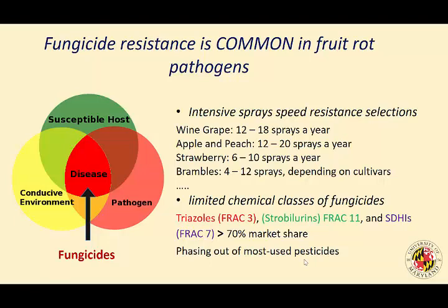Those are specialty crops — fruit and vegetables — and they require intensive, large fungicide input. For example, wine grapes are sprayed about 12 to 18 times a season. Another factor is the limited chemical classes of fungicides. We think we have many choices, but really three fungicide groups — FRAC-3 triazoles, strobilurins, and SDHI fungicide FRAC-7 — make up to 70% of market share. With the phasing out of many pesticides due to toxicity and public concerns, we will have even fewer options in the future, and fungicide resistance will be a growing concern.